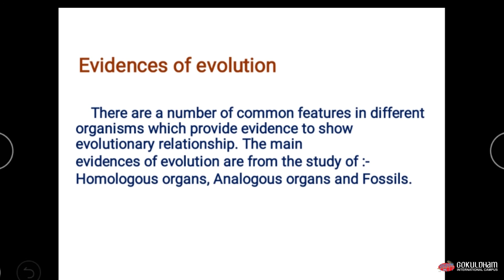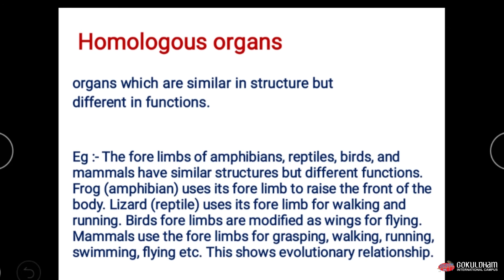The first evidence is homologous organs. Homologous organs are those organs which are similar in structure but different in function — structurally similar but functionally different.